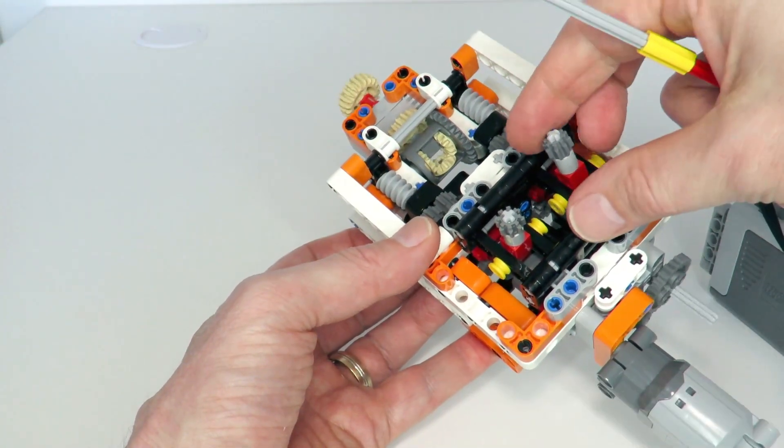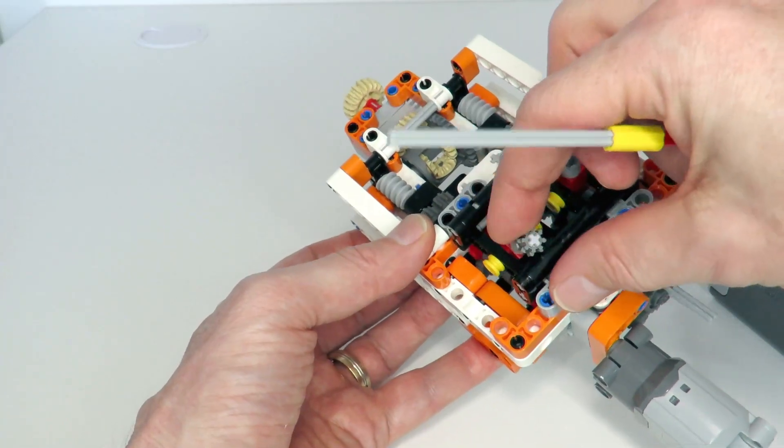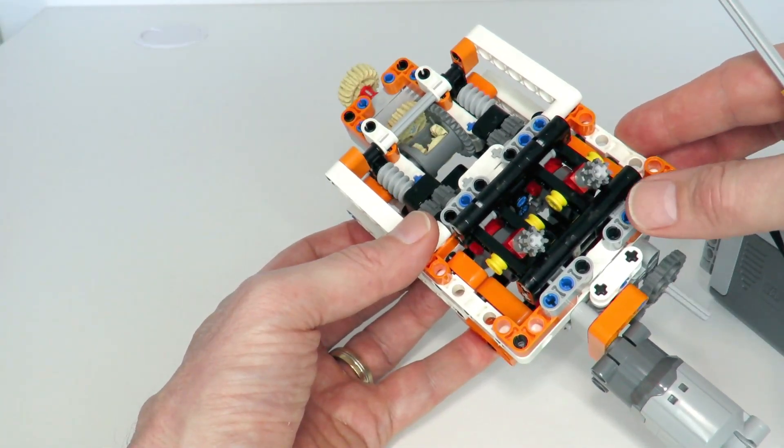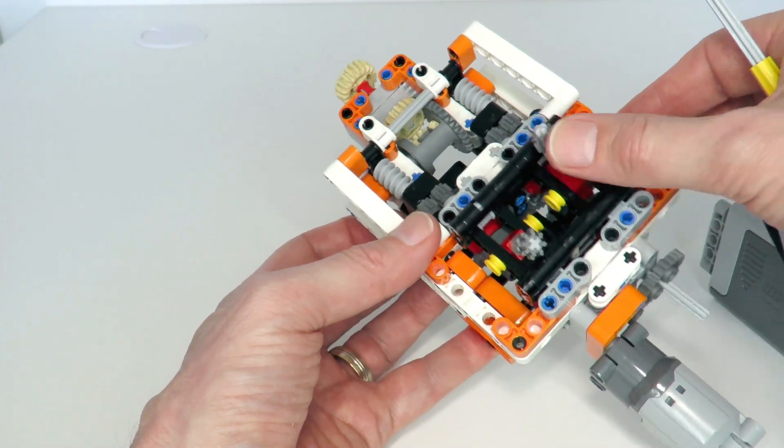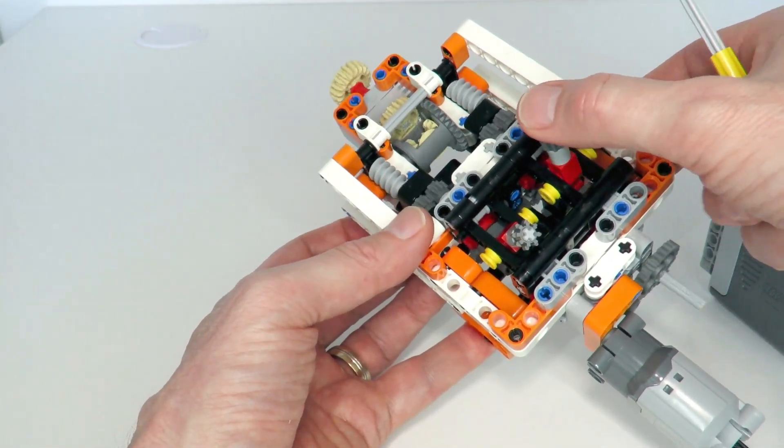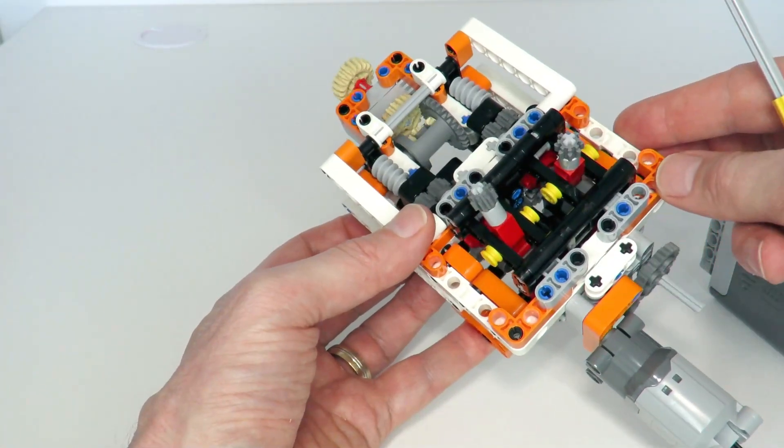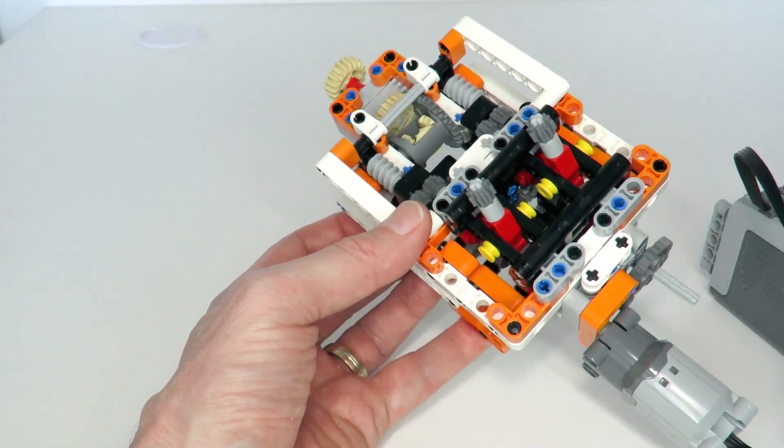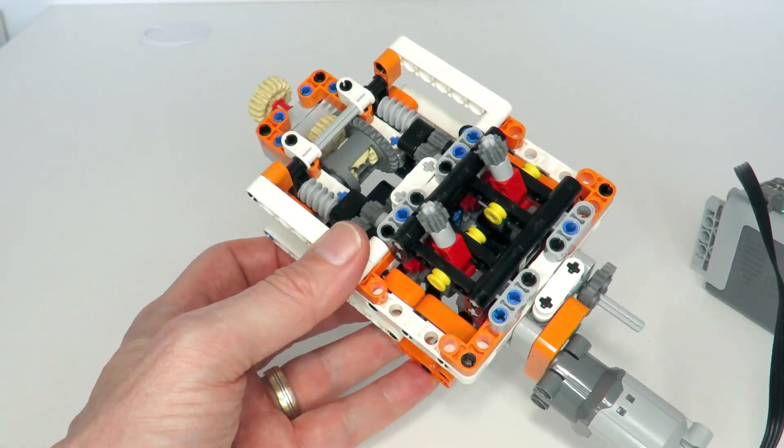This will give us speed two, which is twice as fast. And this here is speed three, and we can add on speed one to give us four, add on two to give us five.